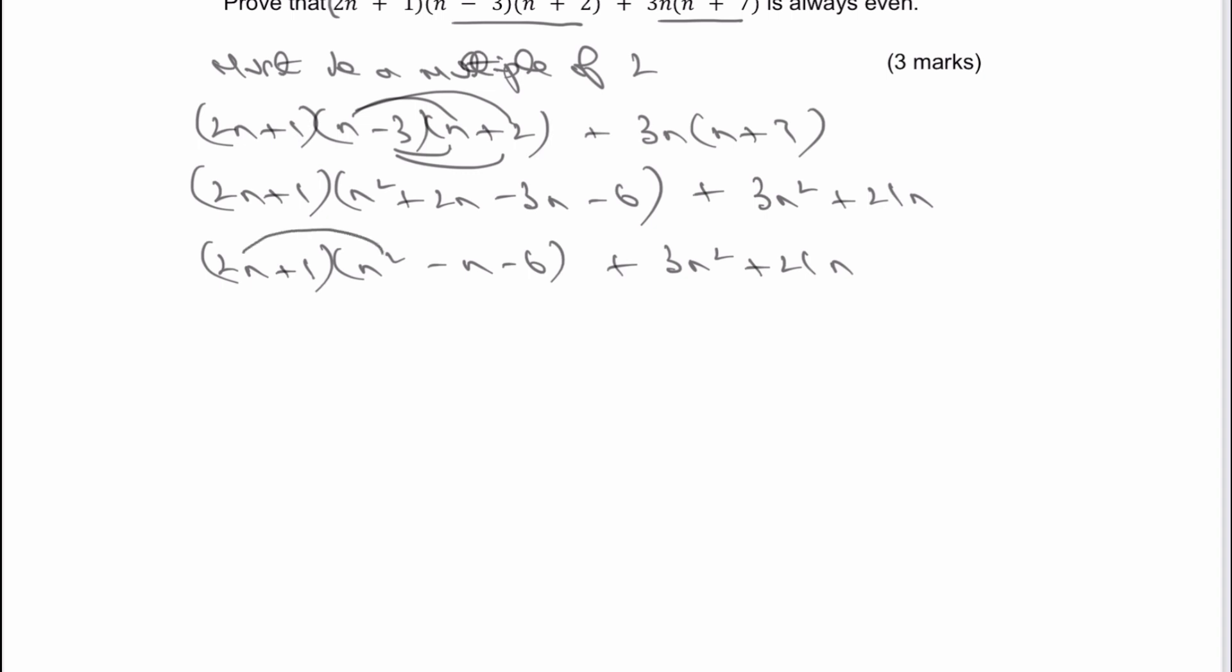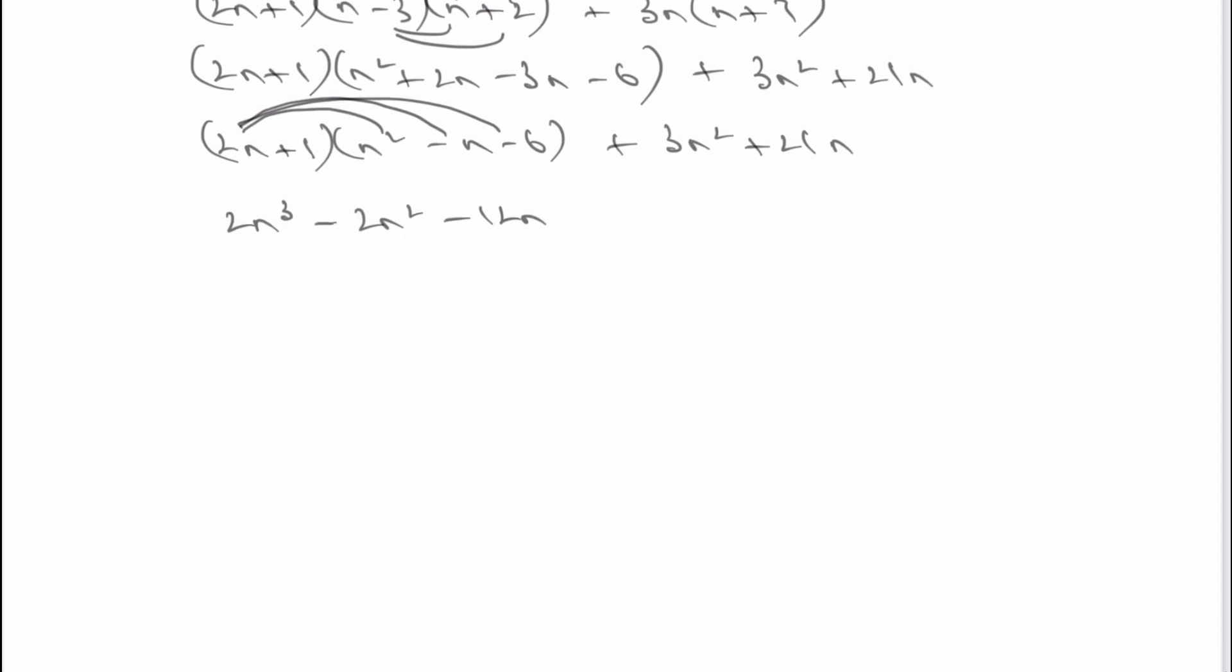So by 2n, I'm going to get 2n times n squared is going to be 2n cubed. 2n times negative n is going to be negative 2n squared. And then that multiplied by that is going to be negative 12n. So I've finished now with multiplying by 2n. I'm going to multiply now by positive 1. So that's going to give me positive n squared. And then I'm going to get negative n. And then I'm going to get negative 6.